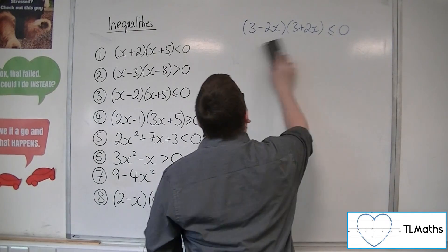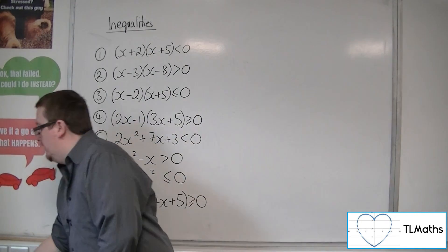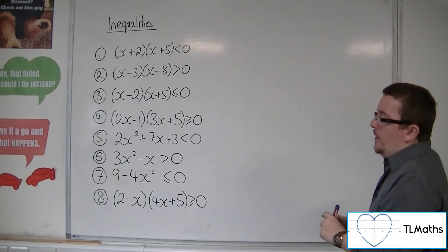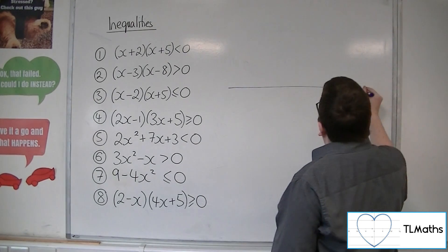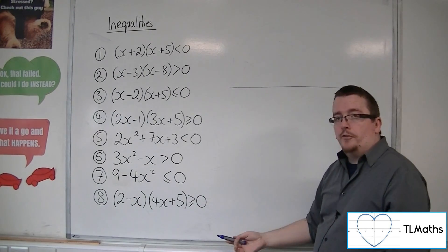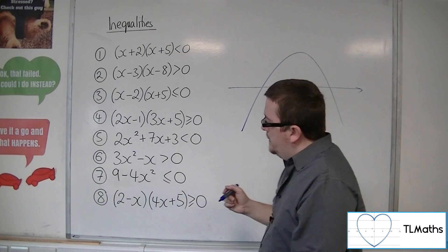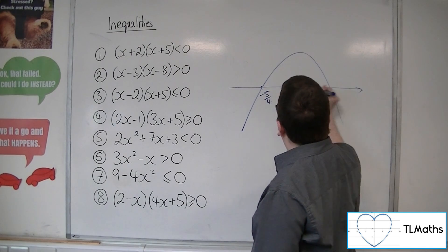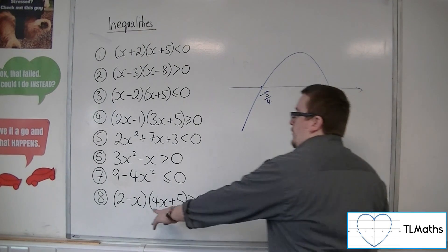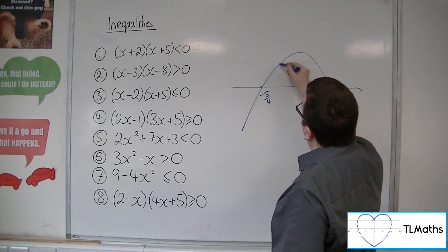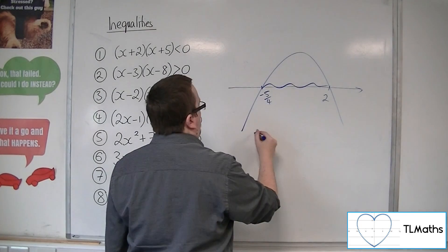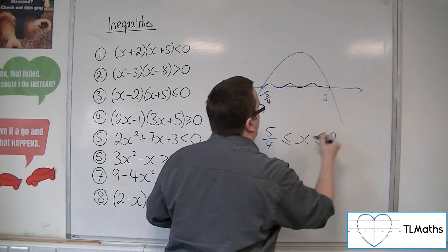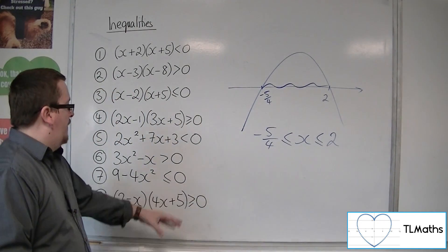We have to be a little bit careful with the shape of the parabola, otherwise everything's going to go the wrong way. Number 8: (2−x)(4x+5) ≥ 0. Multiplying this out gives a negative 4x² term, so the parabola is inverted, crossing at −5/4 and 2. Where is it above the x-axis? It's above it there — that one region gives: −5/4 ≤ x ≤ 2.